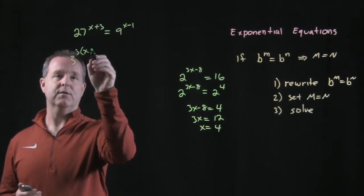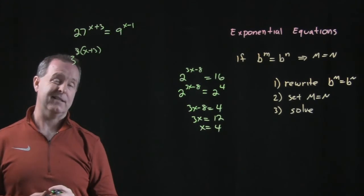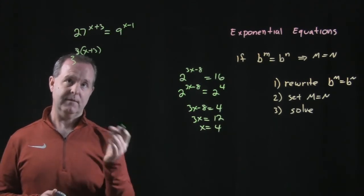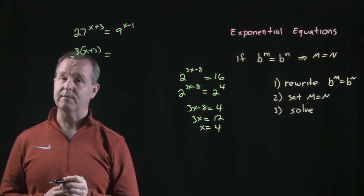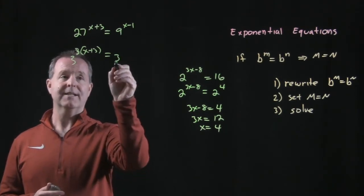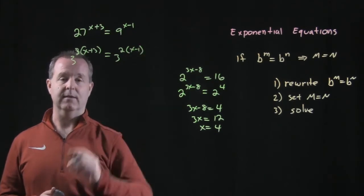Then I have this x plus 3 still there. It still says 27 to the x plus 3. Likewise, 9 can be written in base 3 world as well. That's 3 squared, along with the x minus 1 that's still attached to that. We have the common base now.